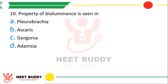Question ten: property of bioluminescence is seen in — option A, Pleurobrachia; option B, Ascaris; option C, Gorgonia; or option D, Adamsia? The correct answer is option A, Pleurobrachia.